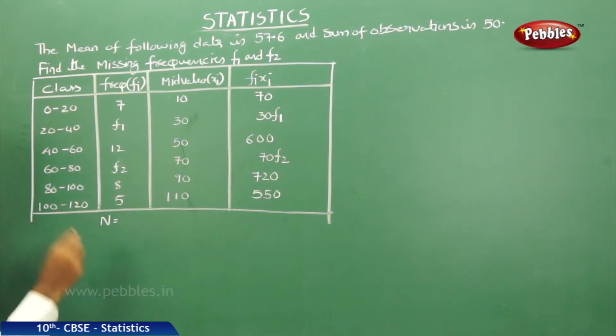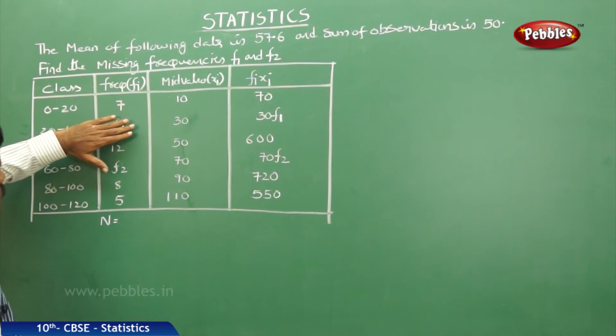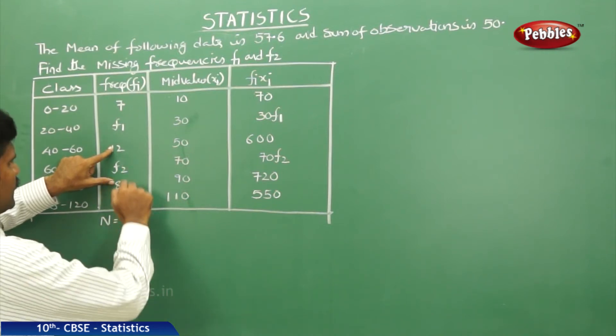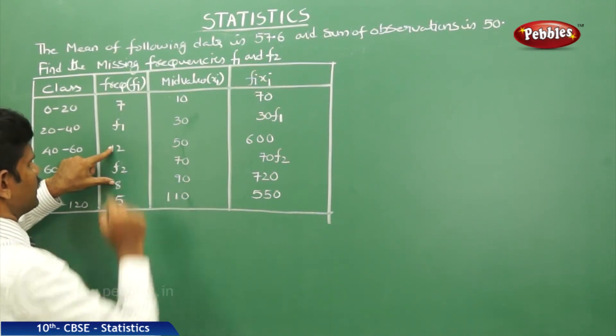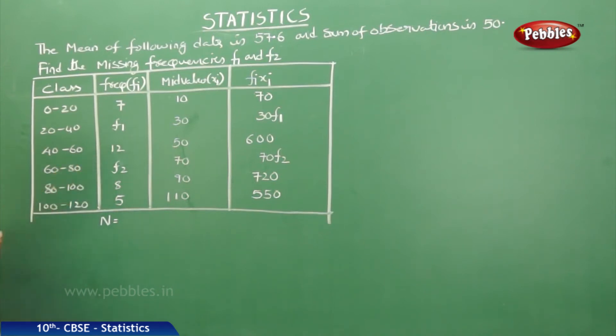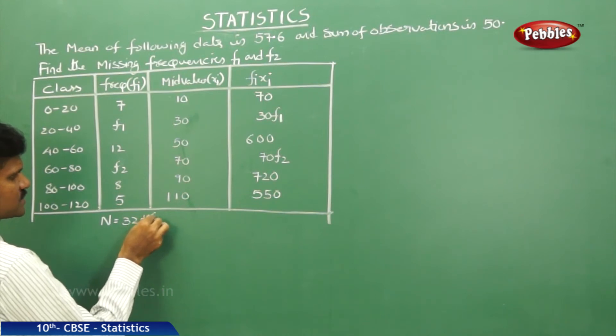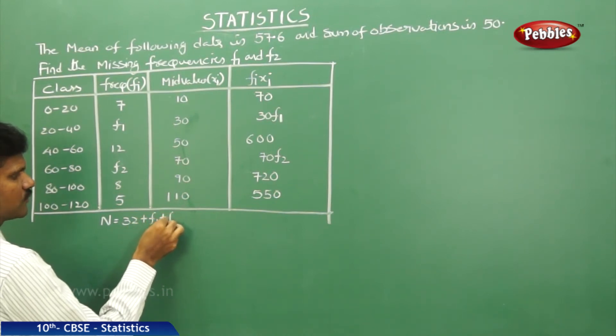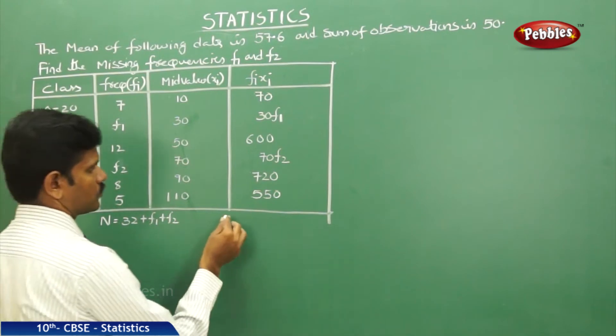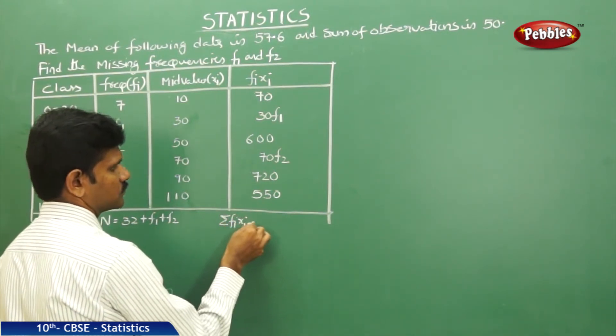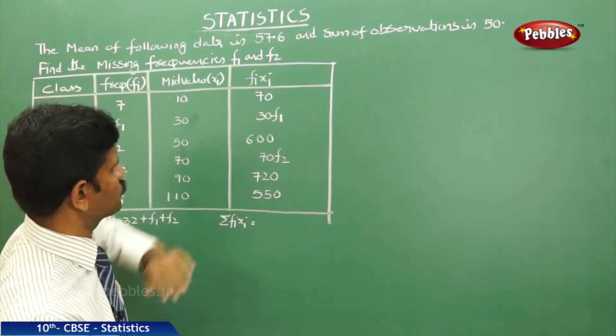Now, your N is equal to, please check once, sum of the frequencies. Don't include F1 and F2. 12 plus 8, 20. 5 plus 7 is 12. 20 plus 12, that is 32. That means sum of frequencies is the sum.